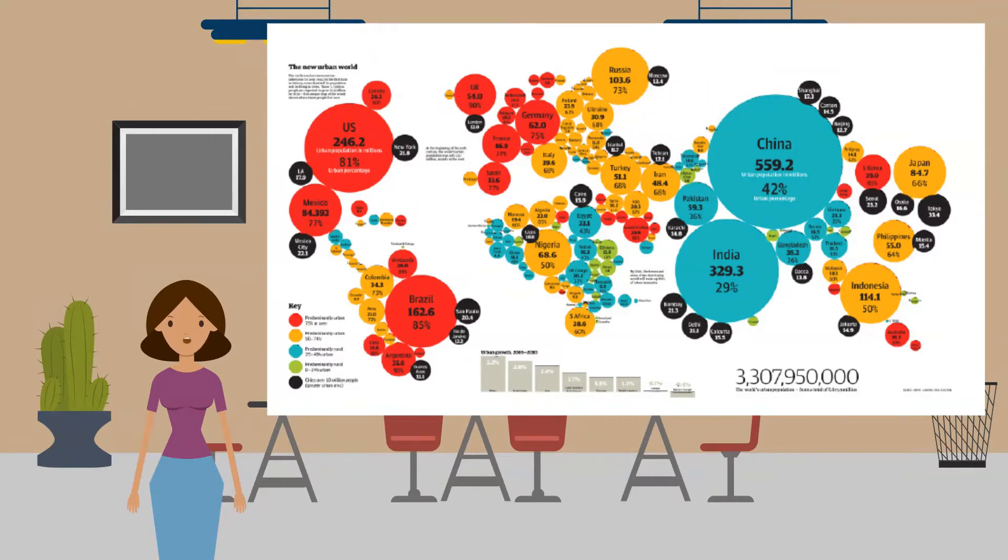In comparison, in low-income countries and developing countries, over half of the population live in urban areas. For example, Turkey has 68% of its population living in urban areas. This is less than in high-income countries, but these urban populations are rapidly growing. However, just because a country has a small proportion of people living in urban areas doesn't mean their population is small. Have a look at India. Only 29% of India's population live in urban towns and cities. However, India has two megacities that each have a population of 21 million, which is the same as Sri Lanka's entire population.